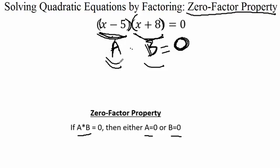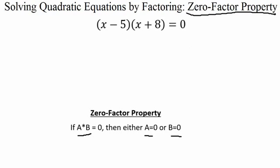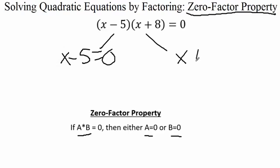Either a would be zero — so zero times b is zero — or b would be zero, so a times zero is zero. One of these has to be zero. Since we don't know which one it is, we assume that they both are. So we figure out what would make each factor equal to zero. We split up these terms and set either x minus five equal to zero, or x plus eight equal to zero.